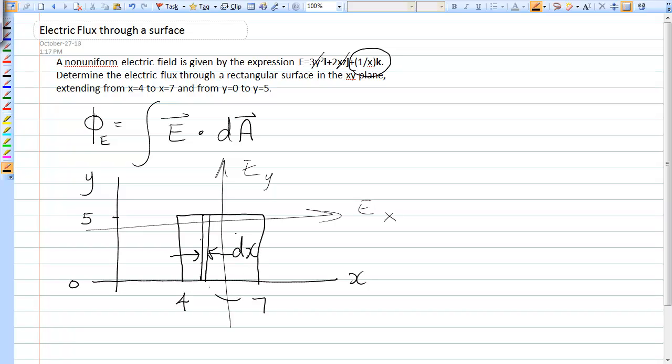Now, the area of this strip, dA, is equal to the thickness dx times the height 5.